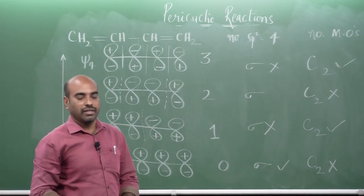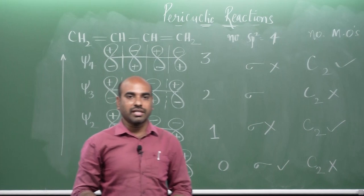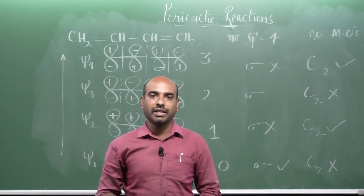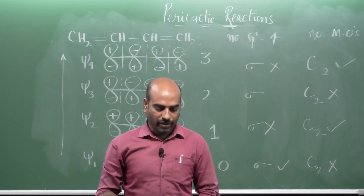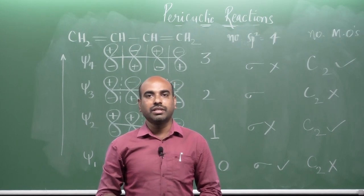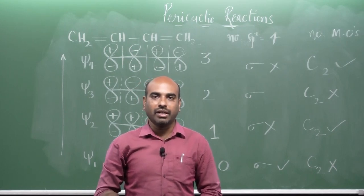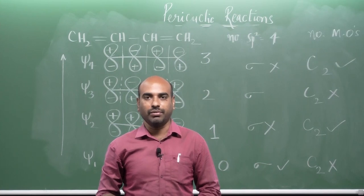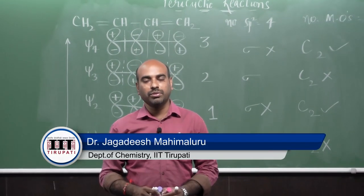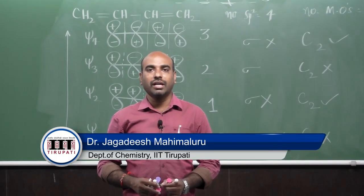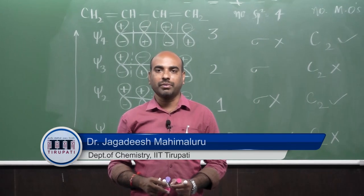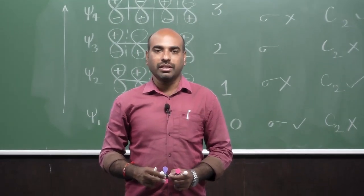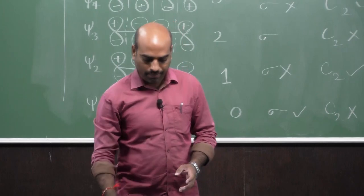Similarly, we can construct pi molecular orbitals for 1,3,5-hexatriene and for systems with an odd number of sp2 carbon atoms. That will be covered in the next class. Thank you.